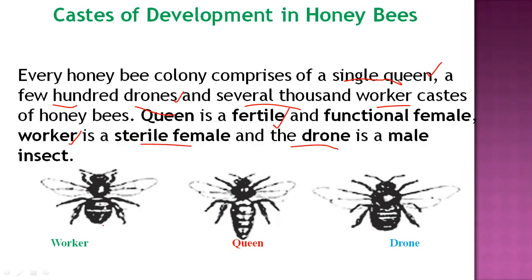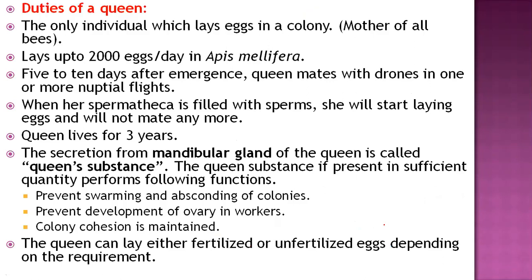Here I am showing you a picture on the slide. This is the worker. This is the queen, which is large in size with a large abdomen. And this is the drone, which is flattened — that is the male. These are the important castes developed in honeybees, a social insect.